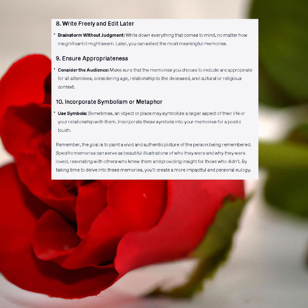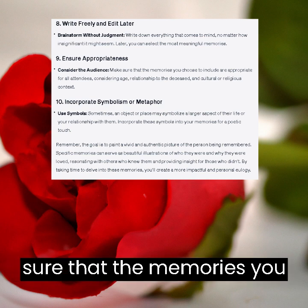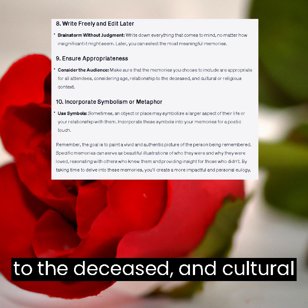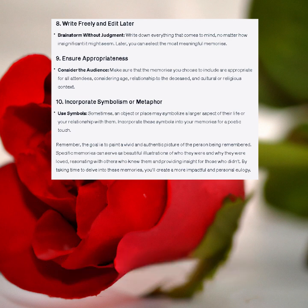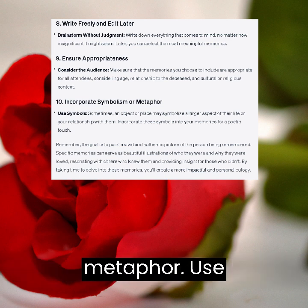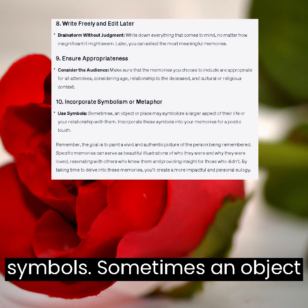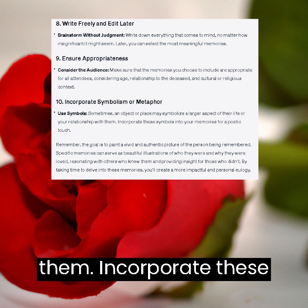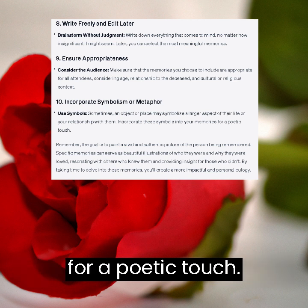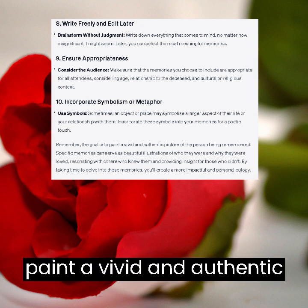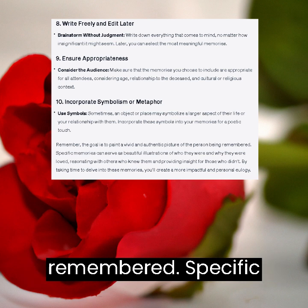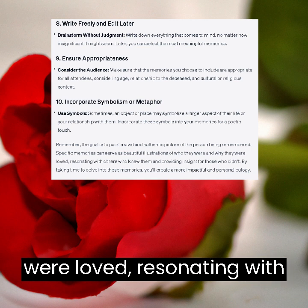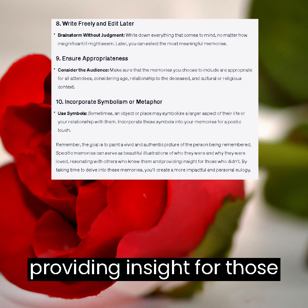Ensure appropriateness. Consider the audience: make sure that the memories you choose to include are appropriate for all attendees, considering age, relationship to the deceased, and cultural or religious context. Incorporate symbolism or metaphor. Use symbols: sometimes an object or place may symbolize a larger aspect of their life or your relationship with them. Incorporate these symbols into your memories for a poetic touch. Remember, the goal is to paint a vivid and authentic picture of the person being remembered. Specific memories can serve as beautiful illustrations of who they were and why they were loved, resonating with others who knew them and providing insight for those who didn't. By taking time to delve into these memories, you'll create a more impactful and personal eulogy.